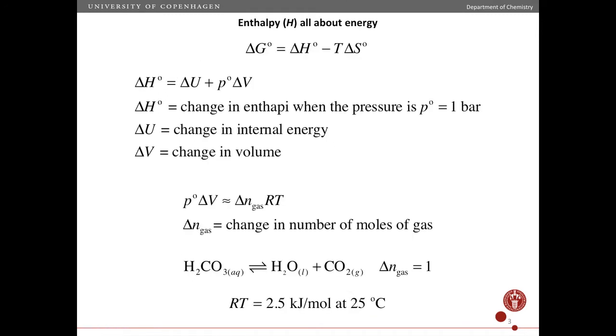If we assume an ideal gas, then estimating this contribution from the pressure-volume term using the ideal gas equation is a very good approximation. Delta N gas is the change in the number of moles of gas. For example, for this reaction here, you have something dissolved in aqueous solution that makes a liquid and a gas. The change in the number of moles of gas is 1. At room temperature, this would correspond to 2.5 kJ per mole. So as we'll see, that's not really a very large amount of energy. Mostly what controls the enthalpy is the energy.